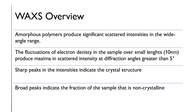The fluctuations of electron density in the sample over small lengths of about 10 nanometers produce maxima in scattered intensity at diffraction angles greater than 5 degrees. Sharp peaks in the intensity indicate crystalline regions, and broad peaks indicate the fraction of the sample that is non-crystalline. Therefore, scientists can use this to determine the degree of polymerization and characterize the polymers.